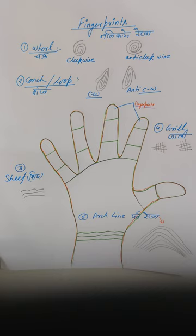Second is a conch. Some people call it loop. In Hindi it is shank. It is also clockwise and anticlockwise, as I mentioned in the picture. The third is Sif. I don't have any English word for it. I mentioned it as S-H-E-E-F. The fourth is a grill, Jali, and fifth is an arc line, that's Pavreka.